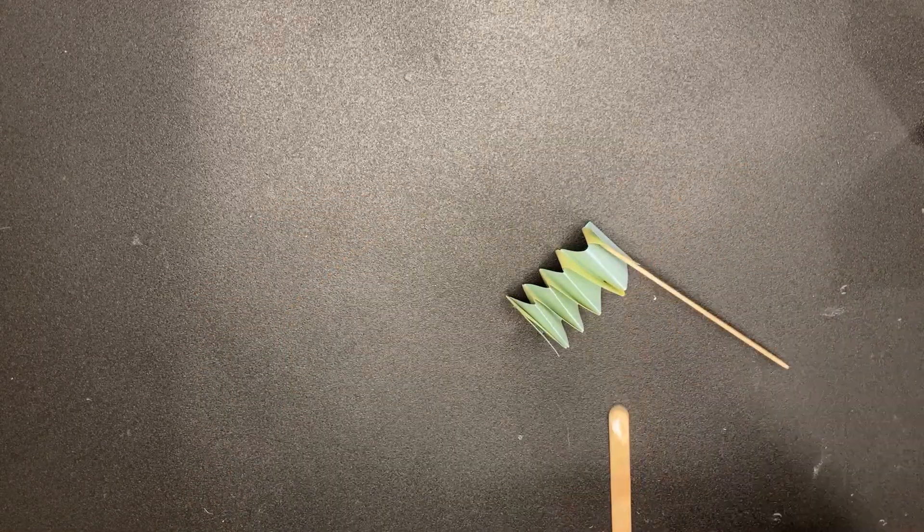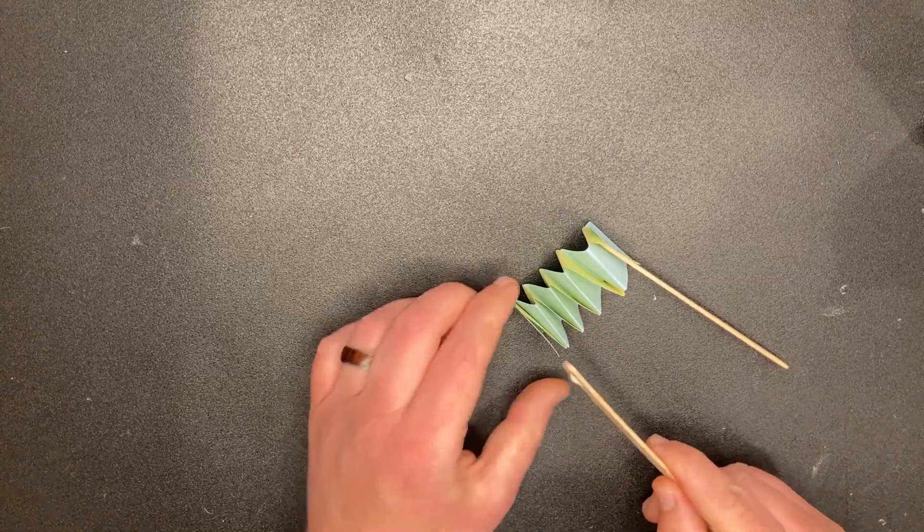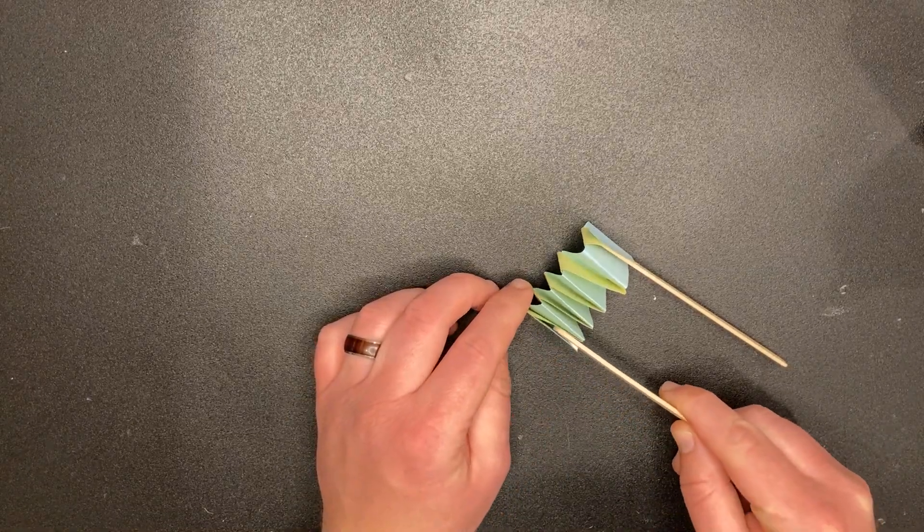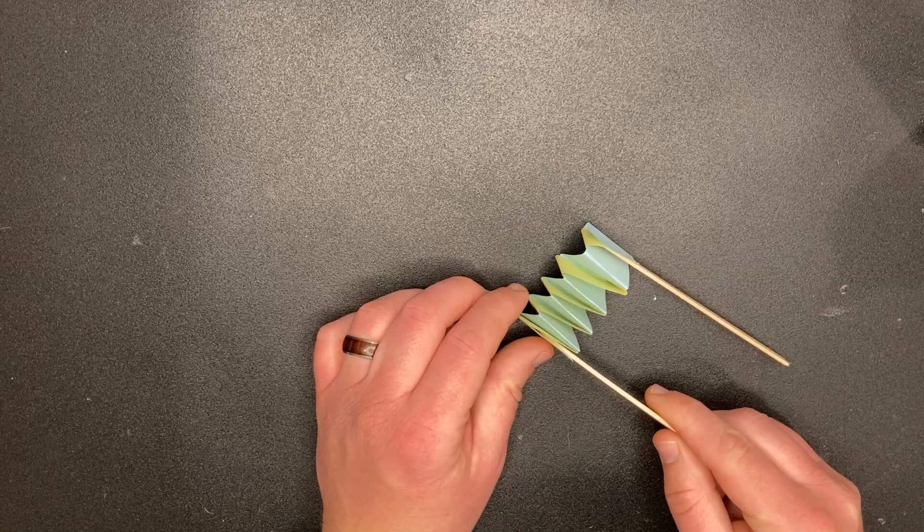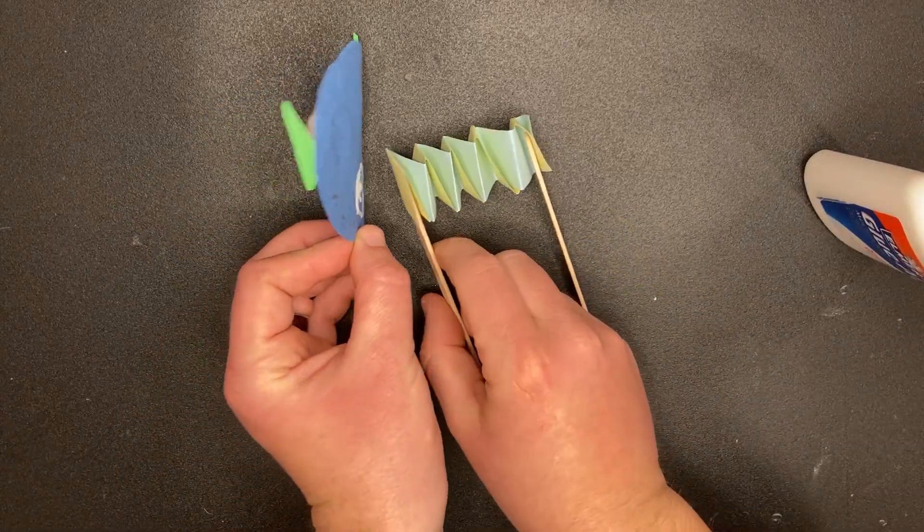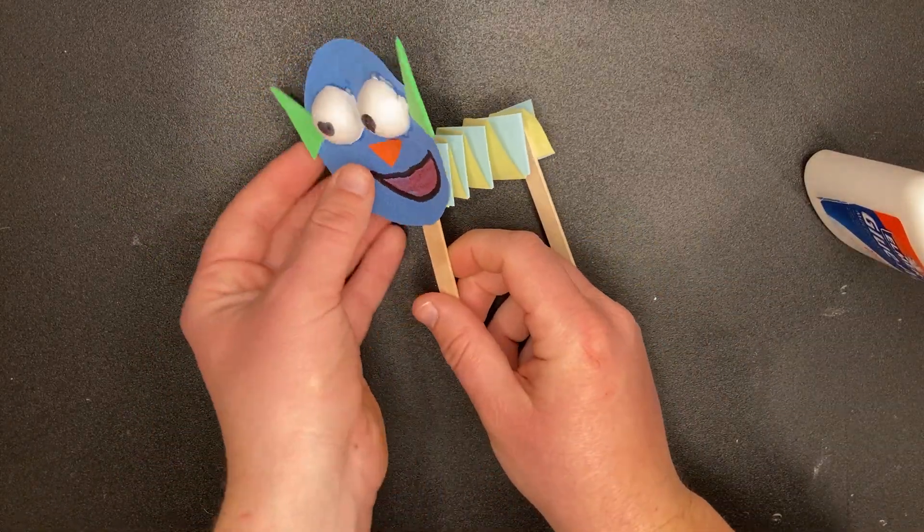Glue the ends together like we did before, and attach two sticks for puppet props. Now, things are finally ready for the puppet's face to arrive.